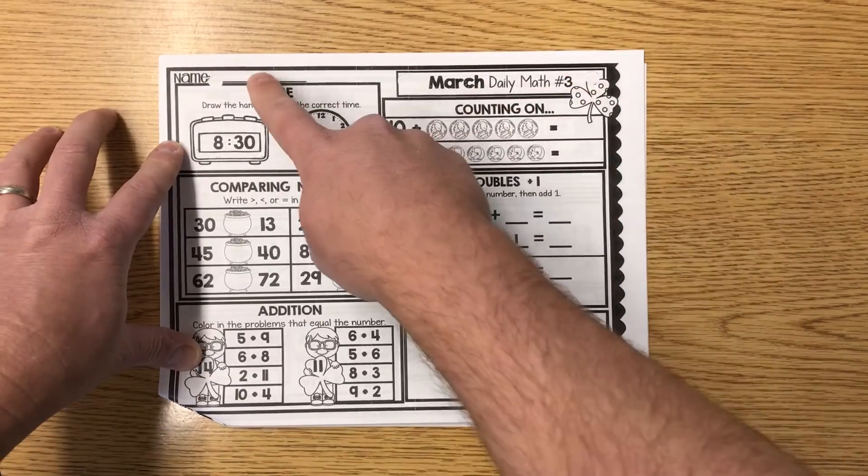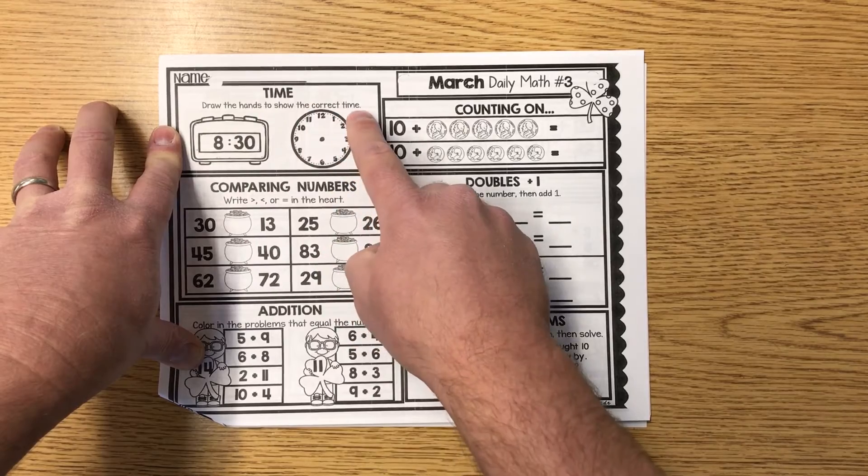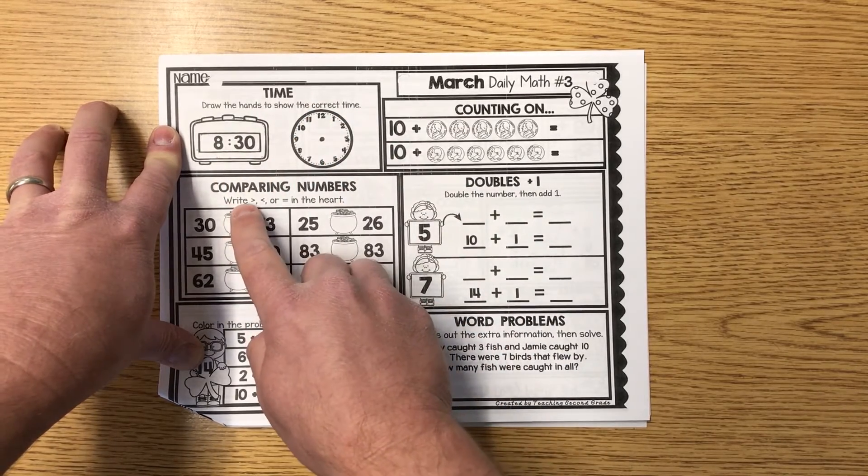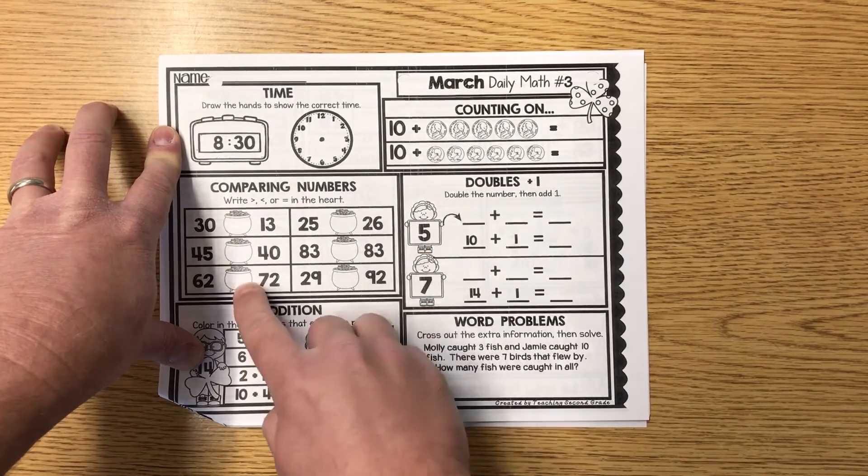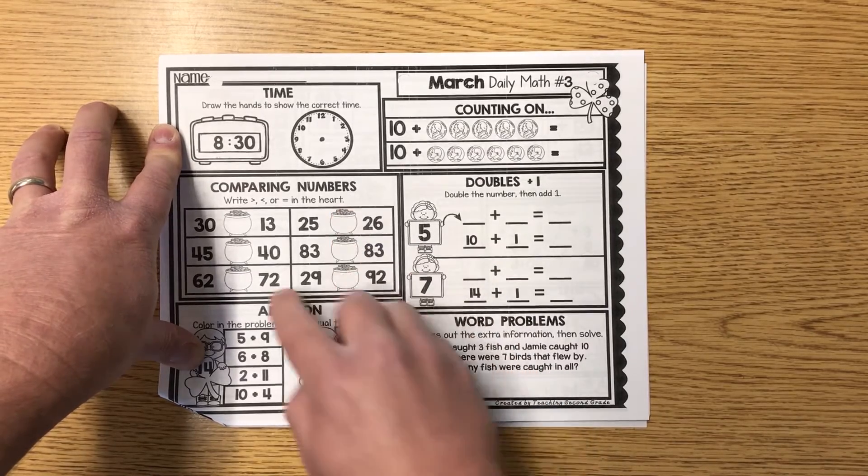Let's go ahead and look at page three. Name neatly on the line, please. Time. Draw the hands to show the correct time for 8:30. Comparing numbers. Write greater than, less than, or equal to in the heart. It's actually in the, looks like a, ooh, leprechaun gold. Write it in here.